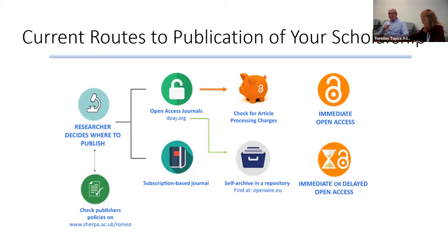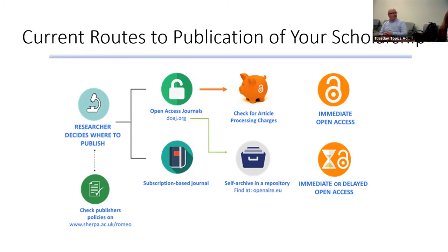One thing I want to mention on this slide: there's a URL for something called Sherpa Romeo, which is a great resource. It allows you to look by publisher and by journal to see what their typical attitudes are towards open access, different kinds of open publishing, and also retaining author rights.